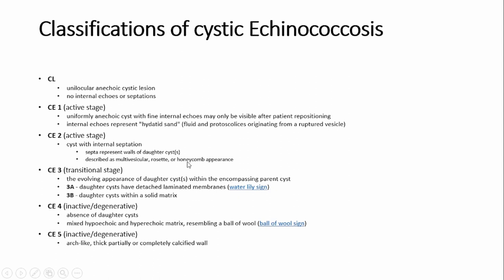CE3 is called the transitional stage — the involuting appearance of daughter cysts within the encompassing parent cyst. It is further categorized as 3A and 3B. In the 3A category, the daughter cyst has a detached laminated membrane, which is called the water lily sign. In 3B, we have daughter cysts within a solid matrix.